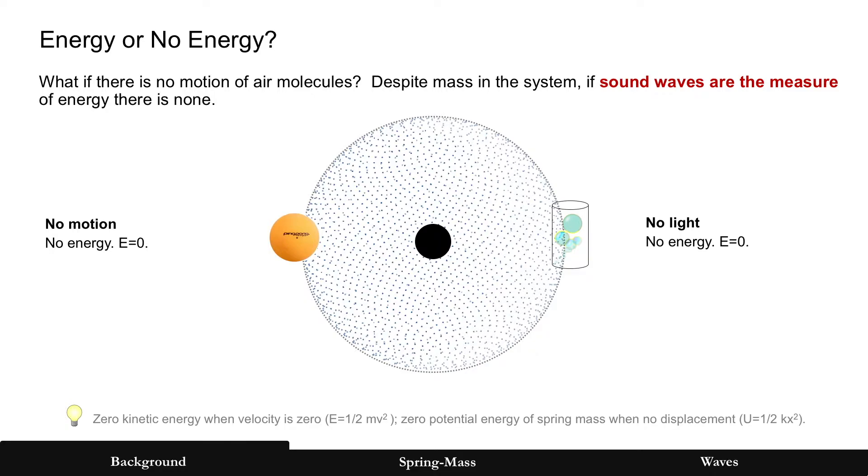All right, but is there energy in the system if the air molecules are not moving? This can be confusing, because someone might say, well, yes, certainly there is mass and therefore there's energy of those air molecules. Let's do this. Let's say that there is energy if it can be measured and the sound waves are the measure of that energy. If there's no motion of those air molecules, then, of course, there's no motion of that ping pong ball. No energy. There's no motion of those gas bubbles that are vibrating. Therefore, there's no light. No energy.